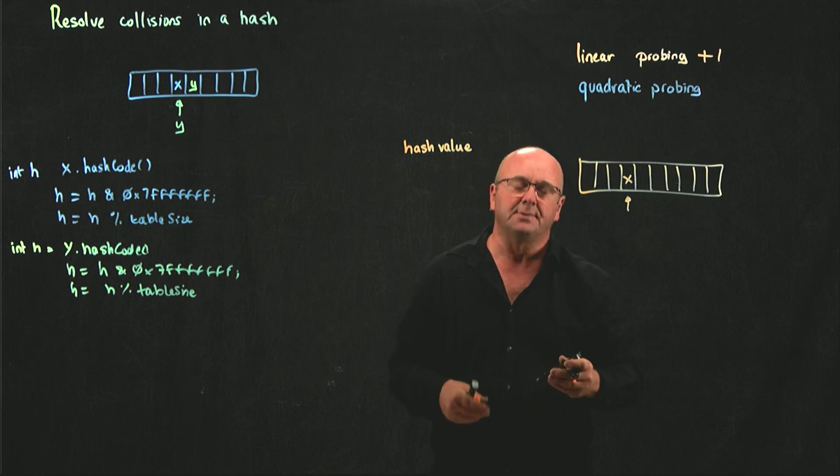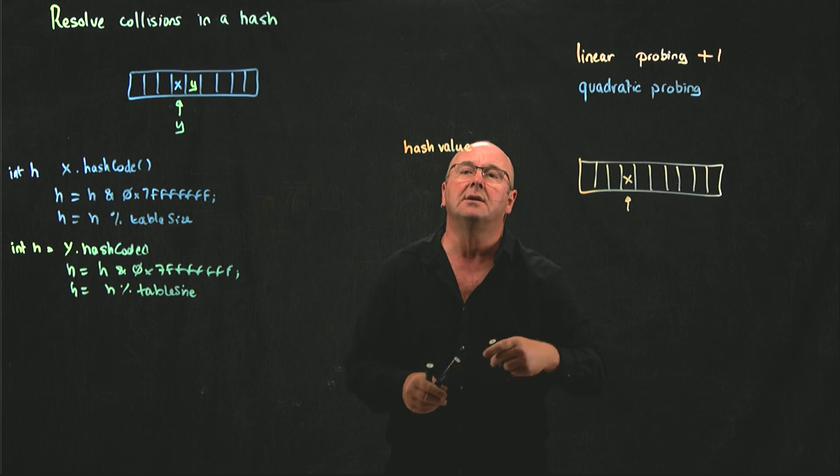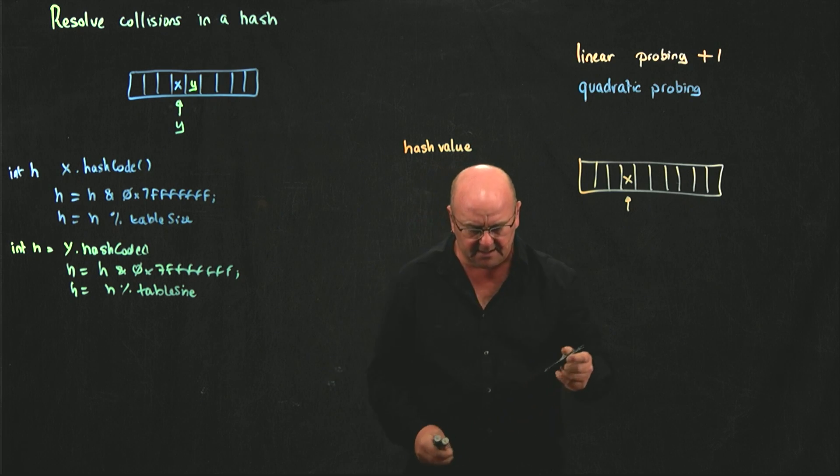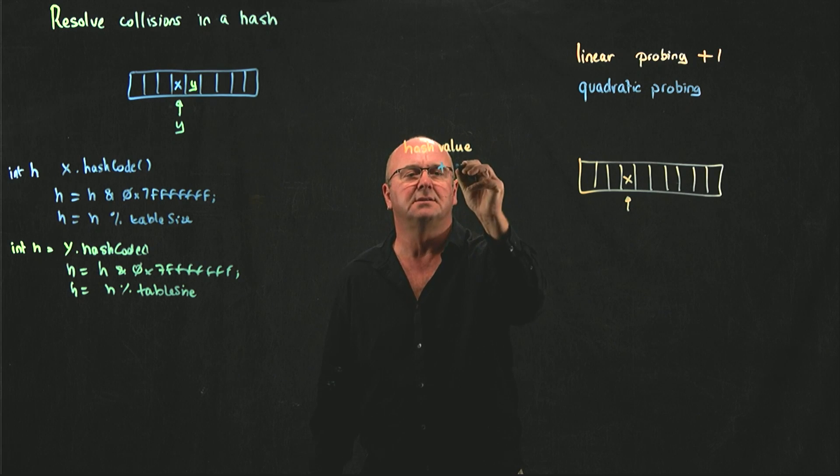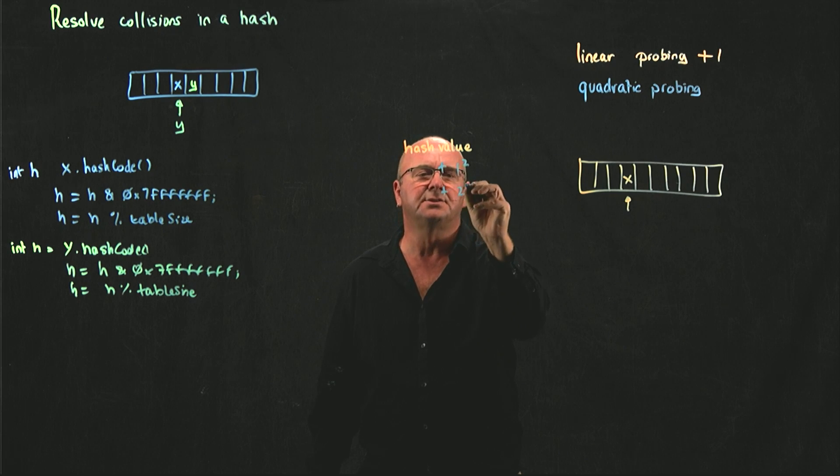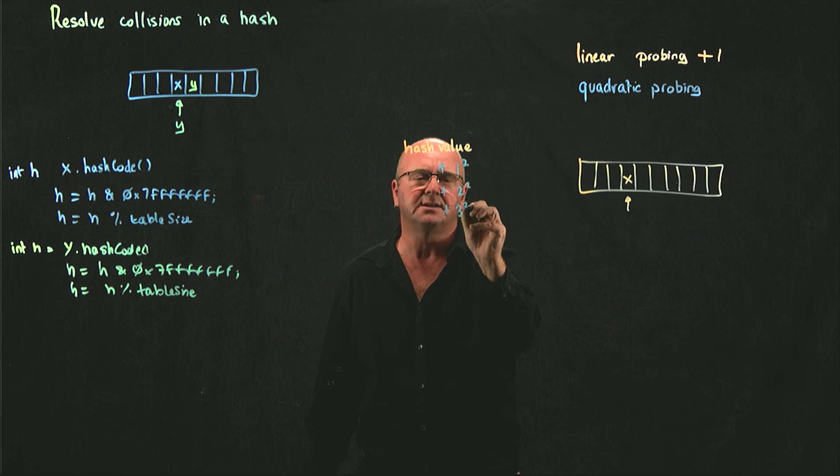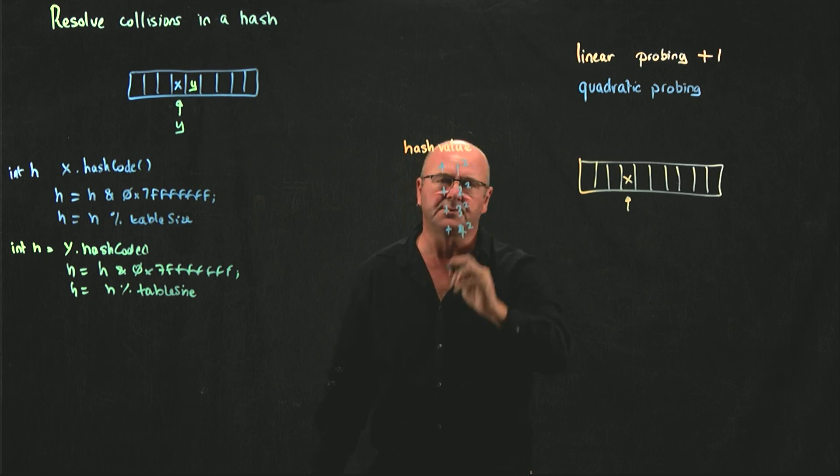what we do is we add a quadratic. So, the first time we'll do hash value plus, let's say one squared, and then plus two squared, and then plus three squared, and then plus four squared.